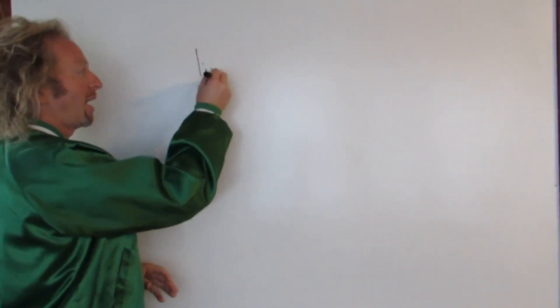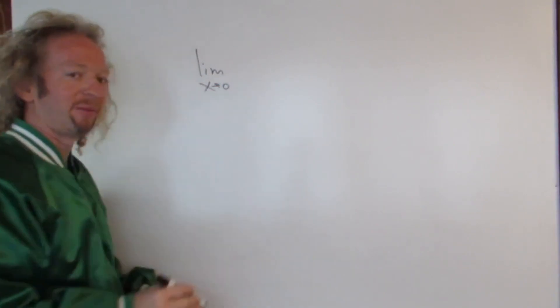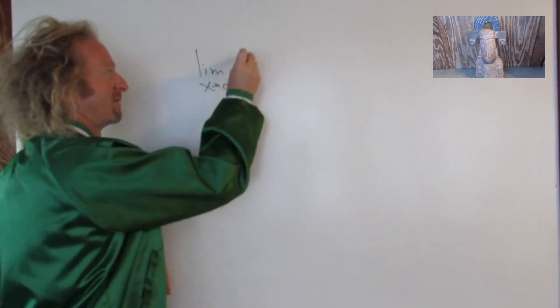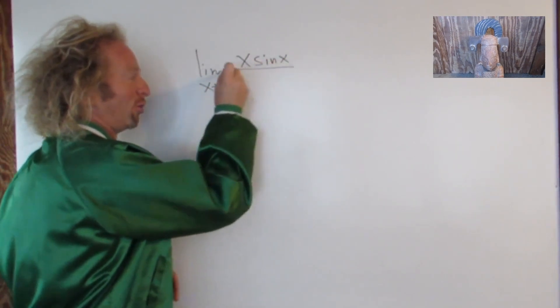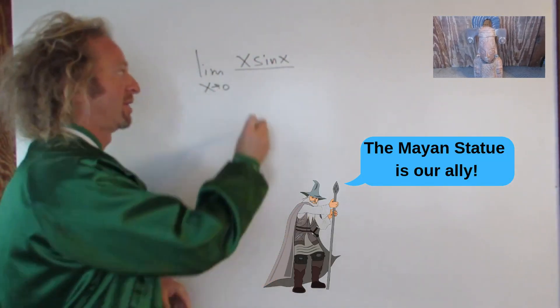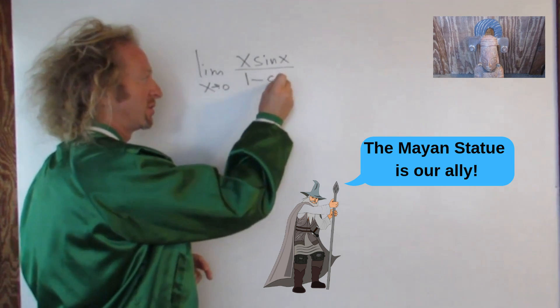In this problem, we're going to do a really cool limit. We have the limit as x approaches zero of x times the sine of x all over 1 minus cosine x.